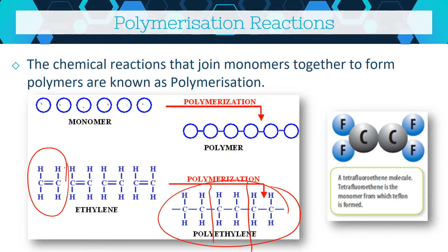One pretty common monomer is tetrafluoroethene — two carbons with four fluorines attached. When you polymerize that, you'd technically call it polytetrafluoroethene, but we actually just call it Teflon. That's what's on your non-stick pans.